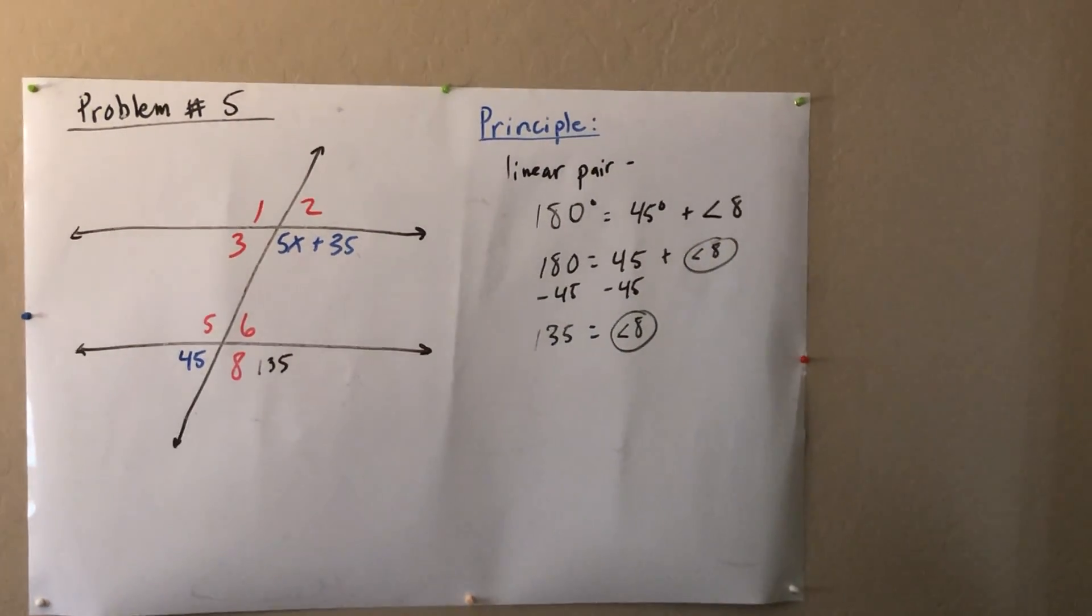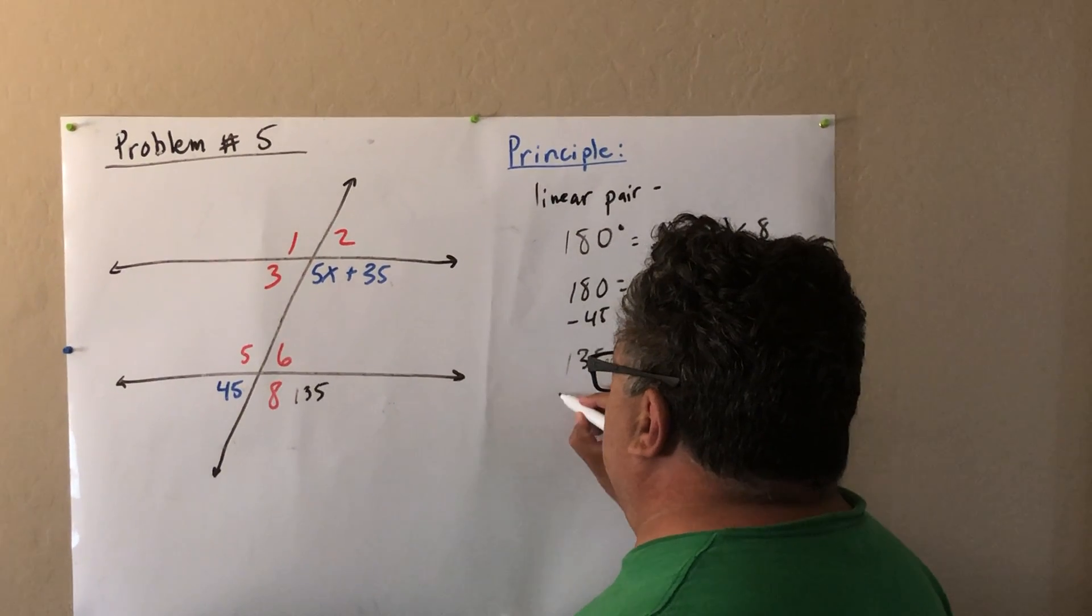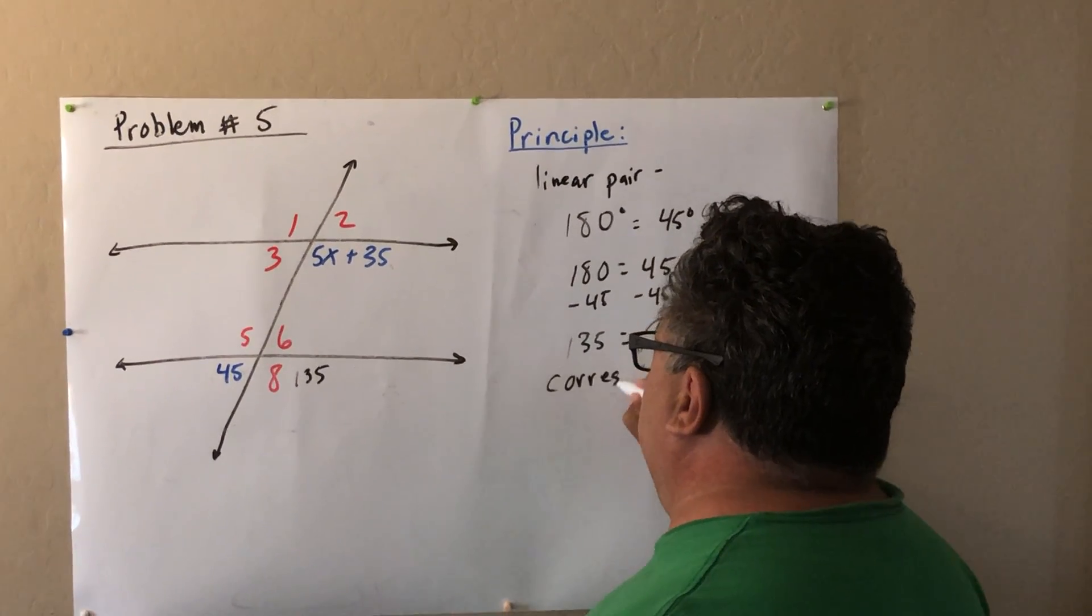Now, if I know that this angle 8 is 135 degrees, we can solve for x. Here's why. We can use our next principle called corresponding angles.